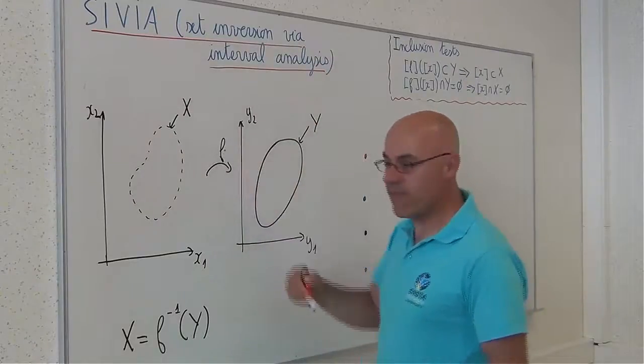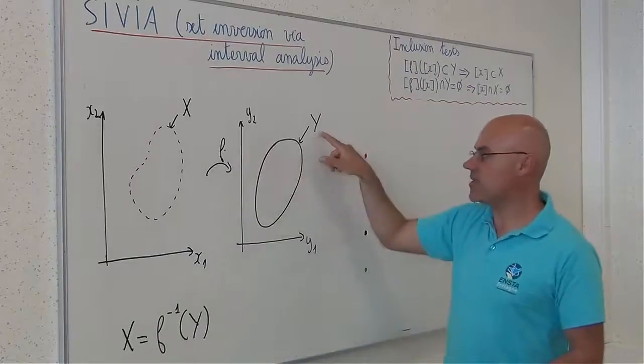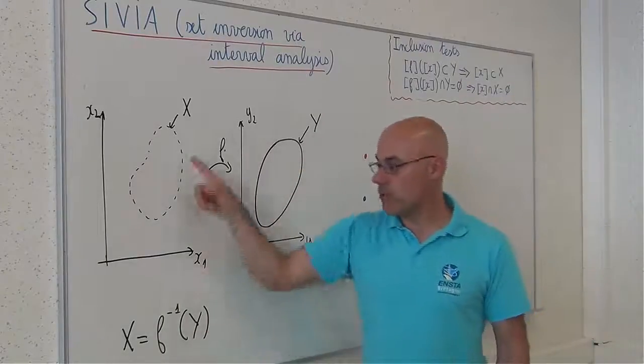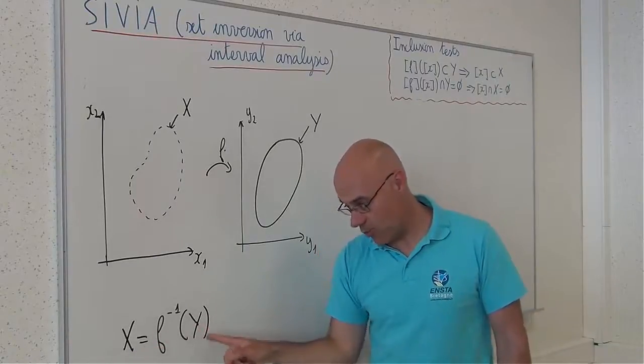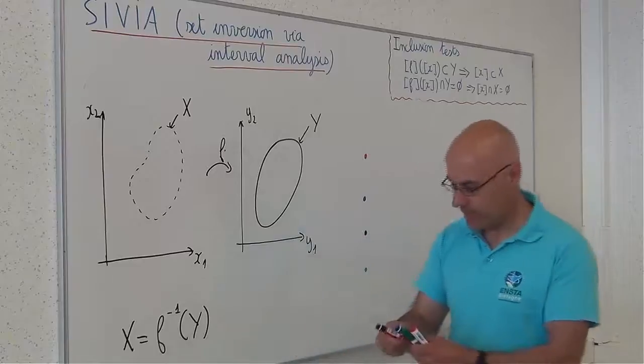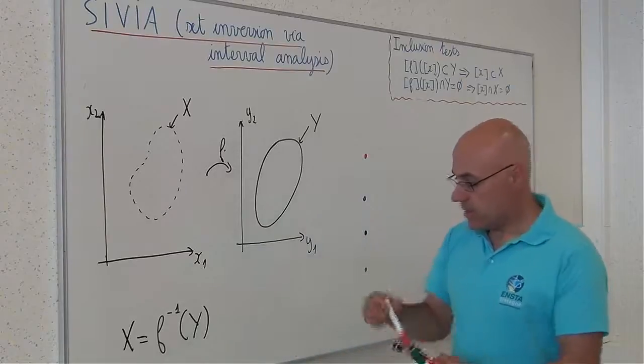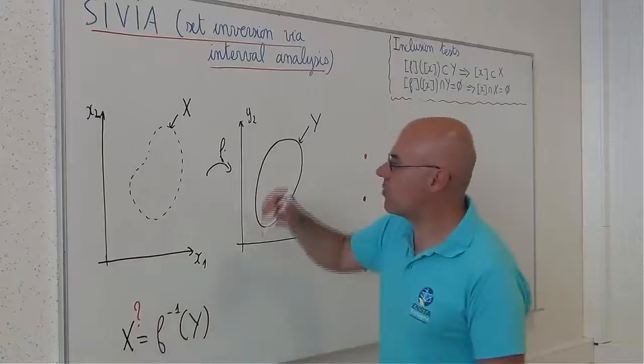I have a function f and a known set y. And I want to compute the reciprocal image x of y by f. This set is uncertain. It is the one I want to compute.